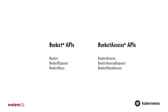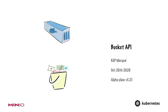Our proposal to add bucket API support into Kubernetes was accepted on the 20th of October 2020, so it's still very new. However, our team is very dedicated and we're moving super fast. We're planning to reach alpha status by version 1.21 of Kubernetes, which is about four to six months from now. By the end of 2021, we hope to achieve general availability.